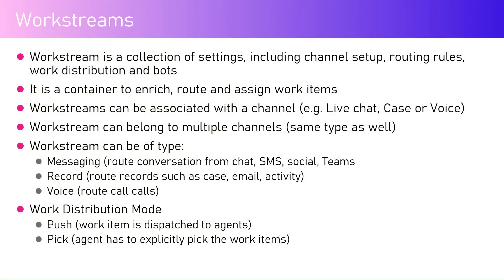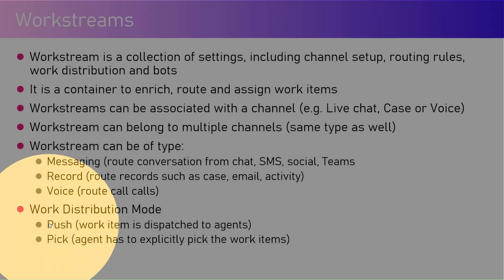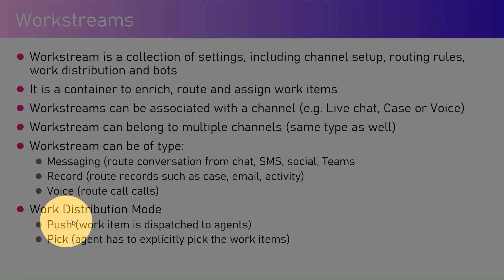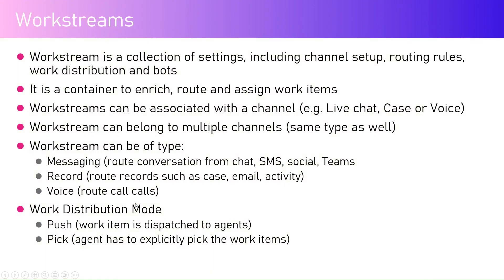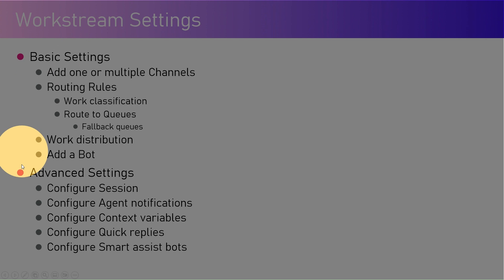The attributes used in push distribution are skills. For example, if there are five agents in your organization and one agent is specialized in Power BI, and a chat receives a request for Power BI, then those things are mapped to agent skills and the agent gets assigned to that work item.